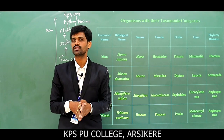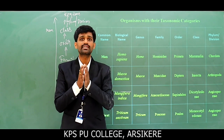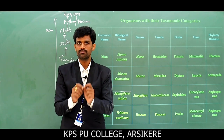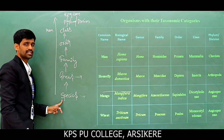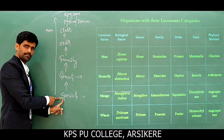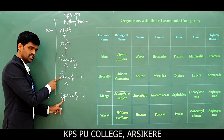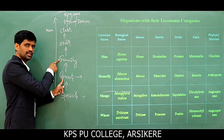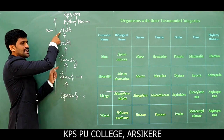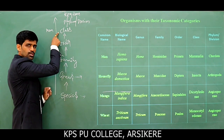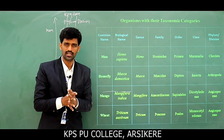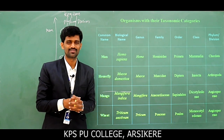To summarize, this class and the last class together covered taxonomical categories. It is a very important topic. The hierarchy goes from species to kingdom in an ascending manner: species is the basic unit of classification, genus is the group of related species, family is the group of related genera, order is the group of related families, class is the group of related orders, phylum is the group of related classes, and kingdom is the highest level of classification. Thank you.